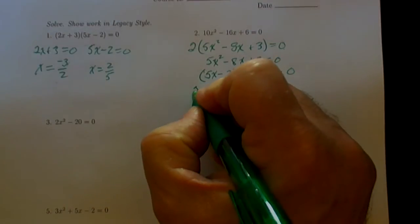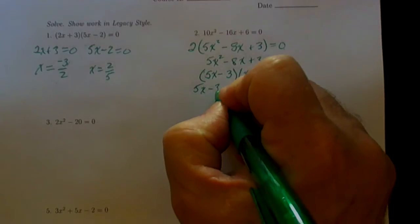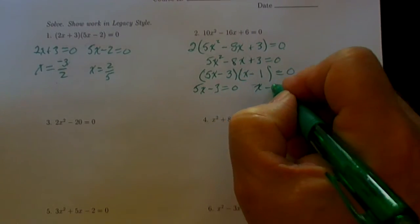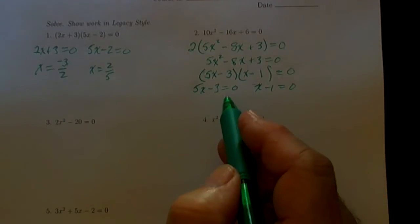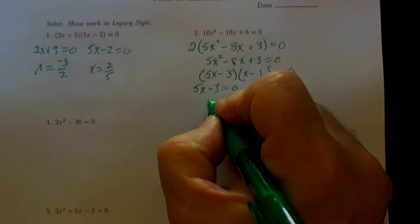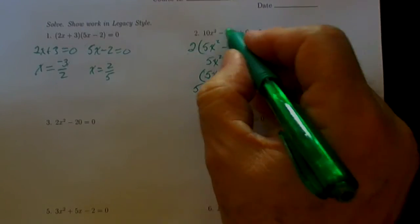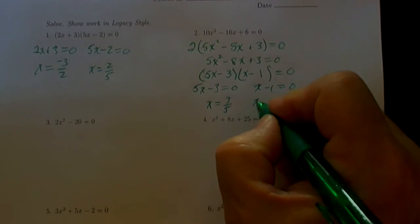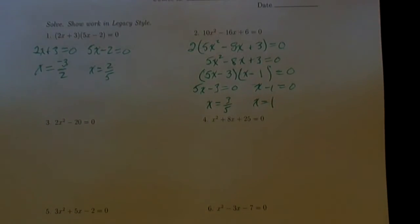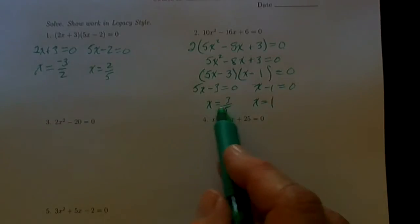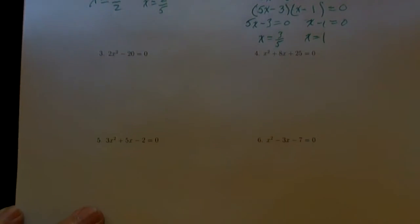That tells us one of the two factors must equal zero: (5x minus 3) equals 0 or (x minus 1) equals 0, again by the zero product property. Adding 3 to both sides and dividing by 5 gives x equals 3 fifths. For the second factor, adding 1 to both sides gives x equals 1. We should plug both back into the original equation to verify.